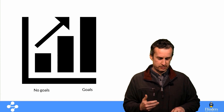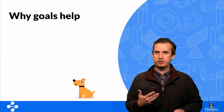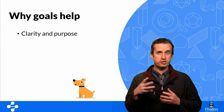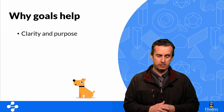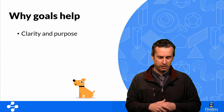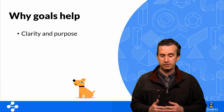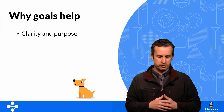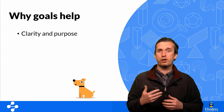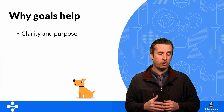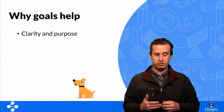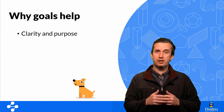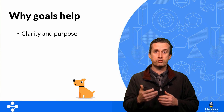So why is this the case? We think there are a few reasons why goals help. The first is clarity and purpose. Goals help people clarify and articulate what is important to them. If I sit down and write out my goals, it forces me to reflect on what I want in my life, and this helps me prioritize what I should focus on. Goals direct your attention, and what you direct your attention towards grows.